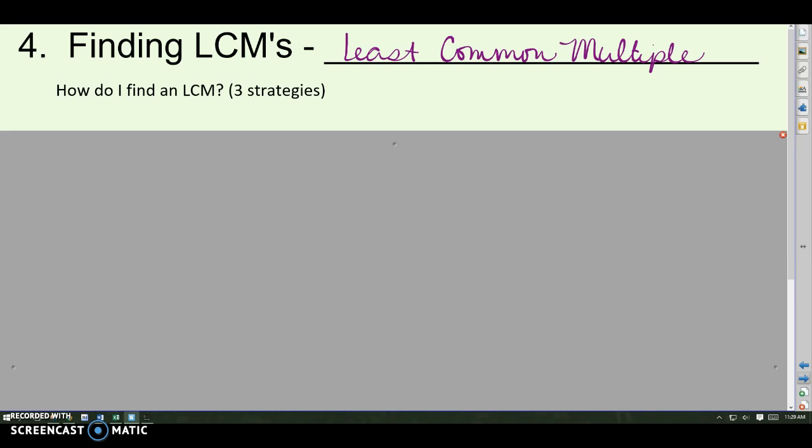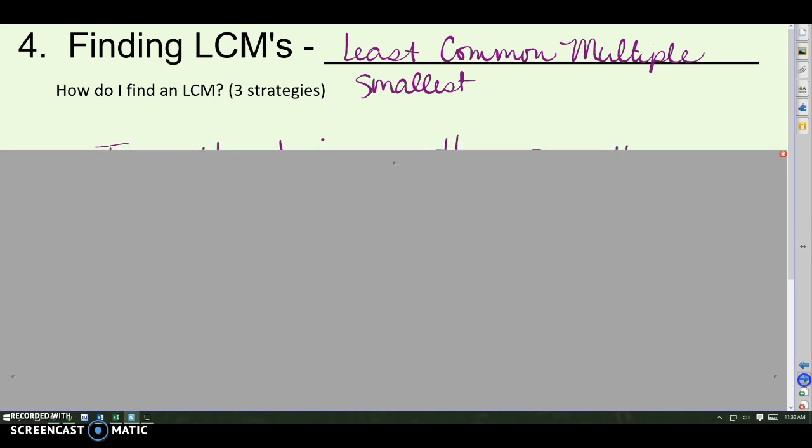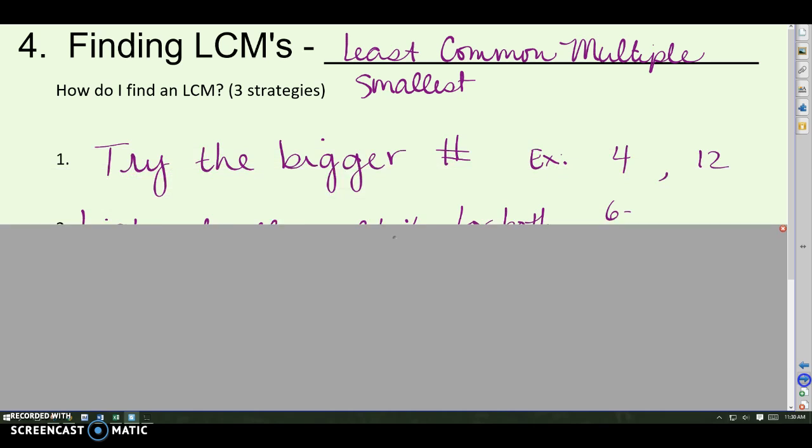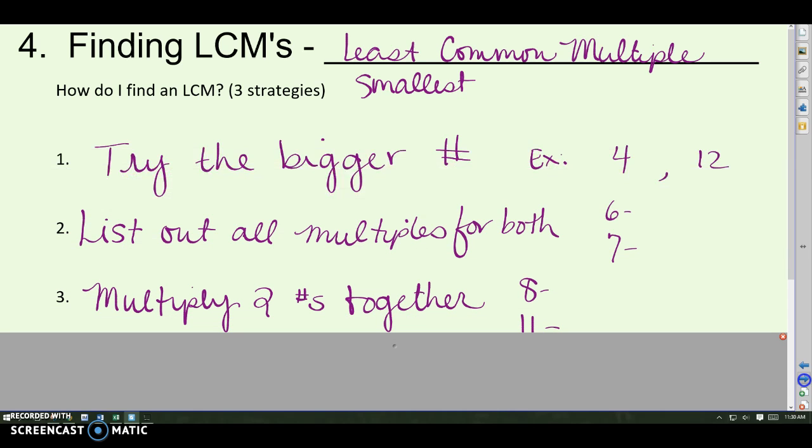So LCMs, least common multiples. Least means smallest. Common means shared, and then multiples. So multiple is going to be a number that when you multiply, like your multiplication chart, times one, times two, times three, times four. All of those answers are the multiples. Let's look at a couple ways we can find a least common multiple.